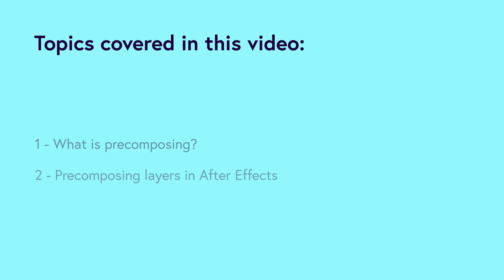For those of you familiar with Photoshop, it may help to think of pre-composing like grouping or using smart objects. In After Effects this allows you to work much more effectively. In this video we will cover what pre-composing is and how to pre-compose layers in After Effects, so you can manage your layers more effectively.